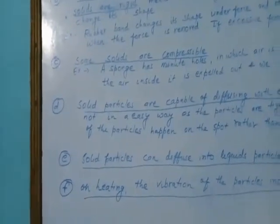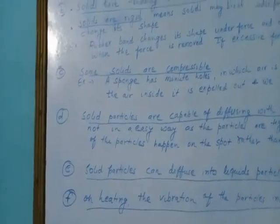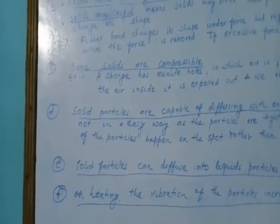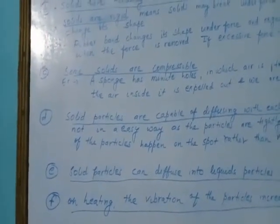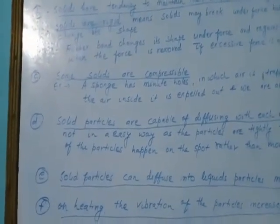The next property of solid is that some solids are compressible. As discussed, solids have low compressibility, but there are some solids in our environment that are compressible. For example, a sponge. A sponge has minute holes in it in which air is trapped, as you can see in the diagram.